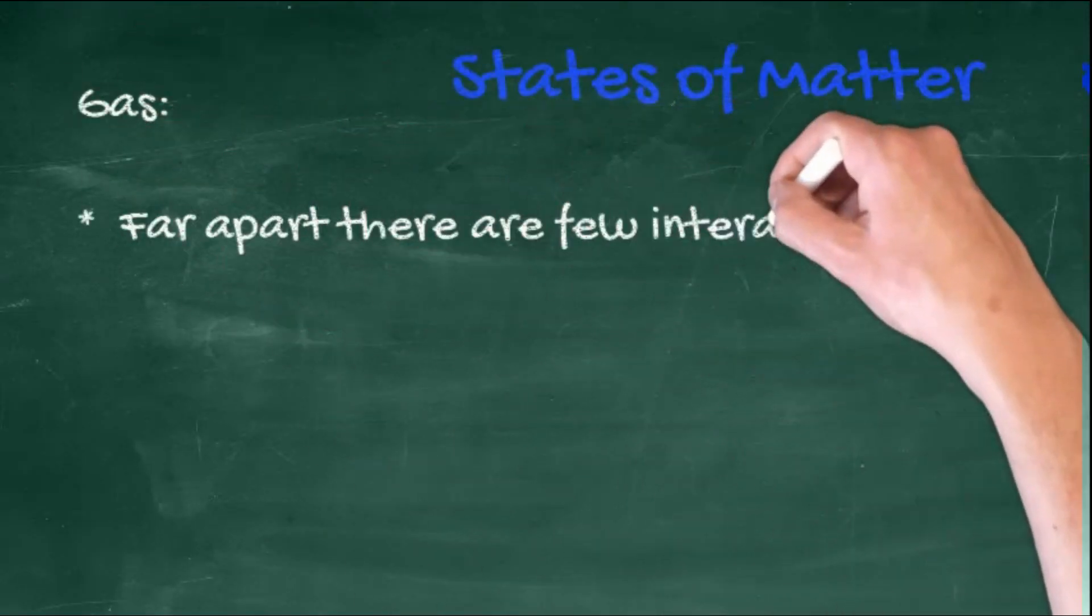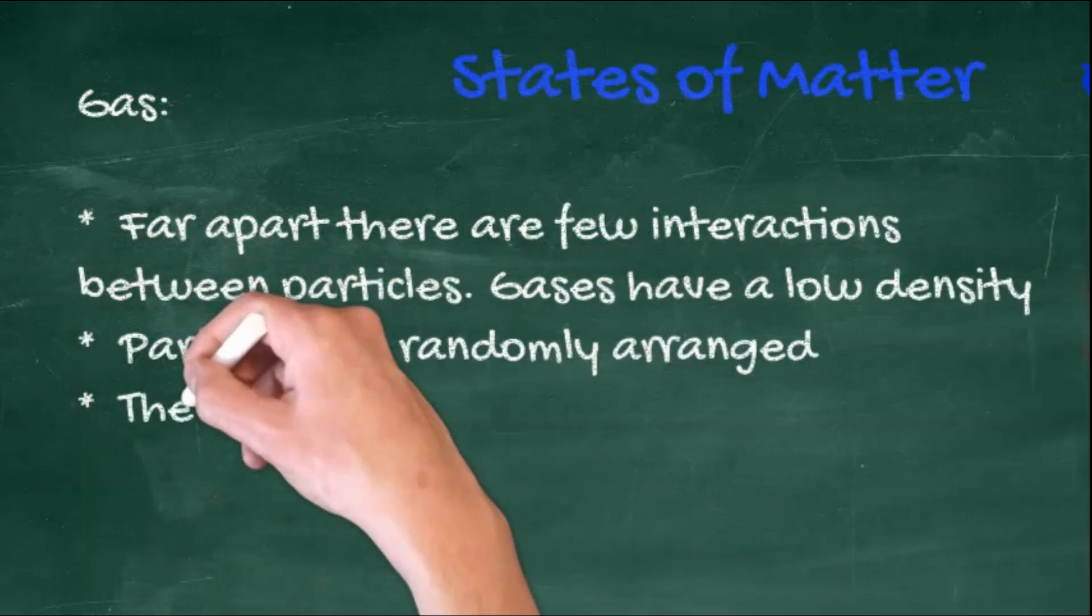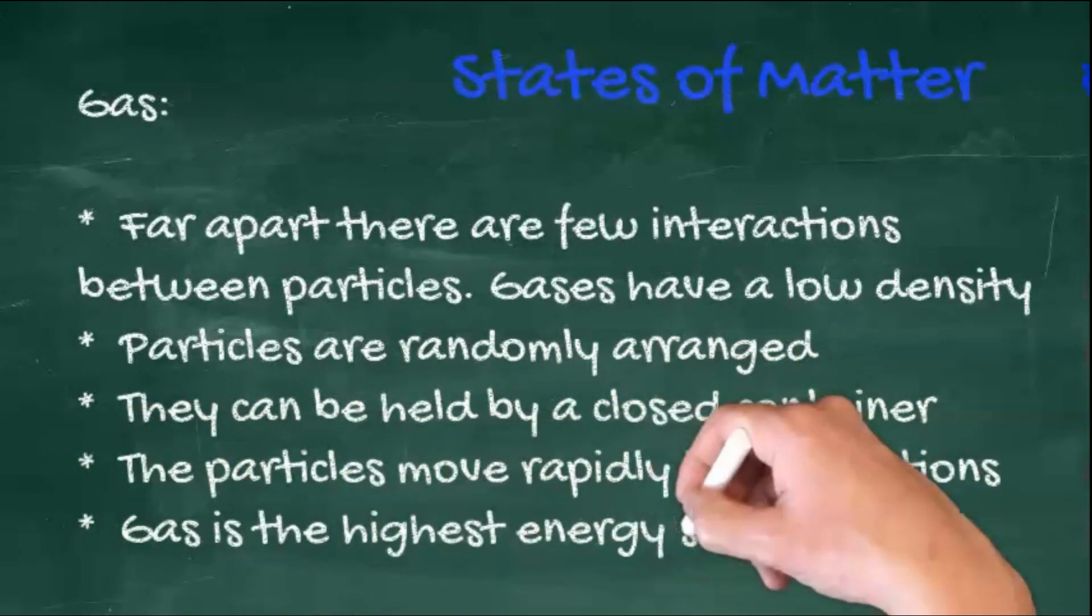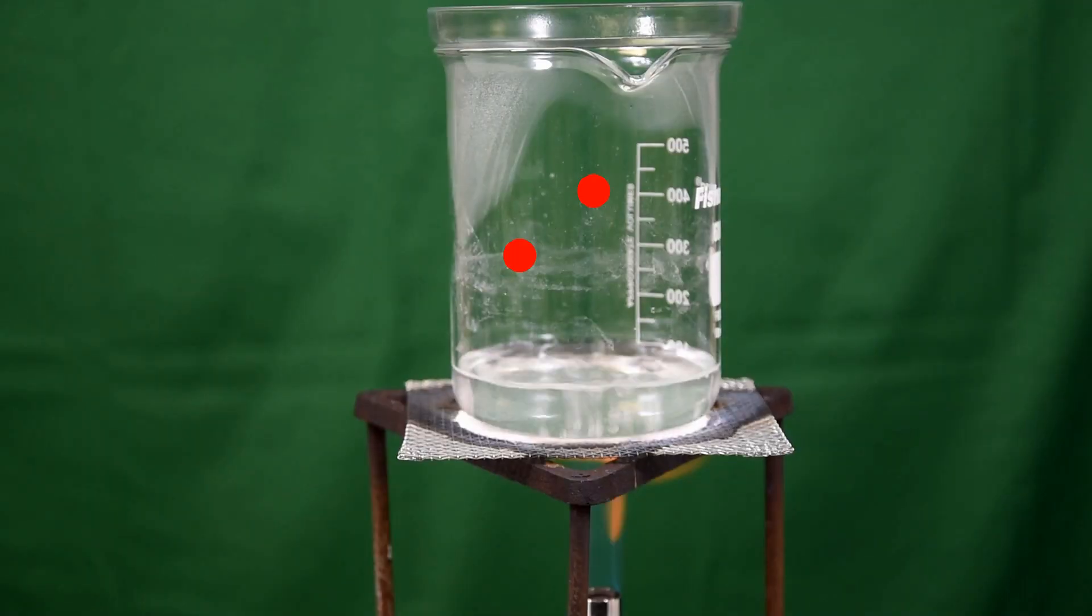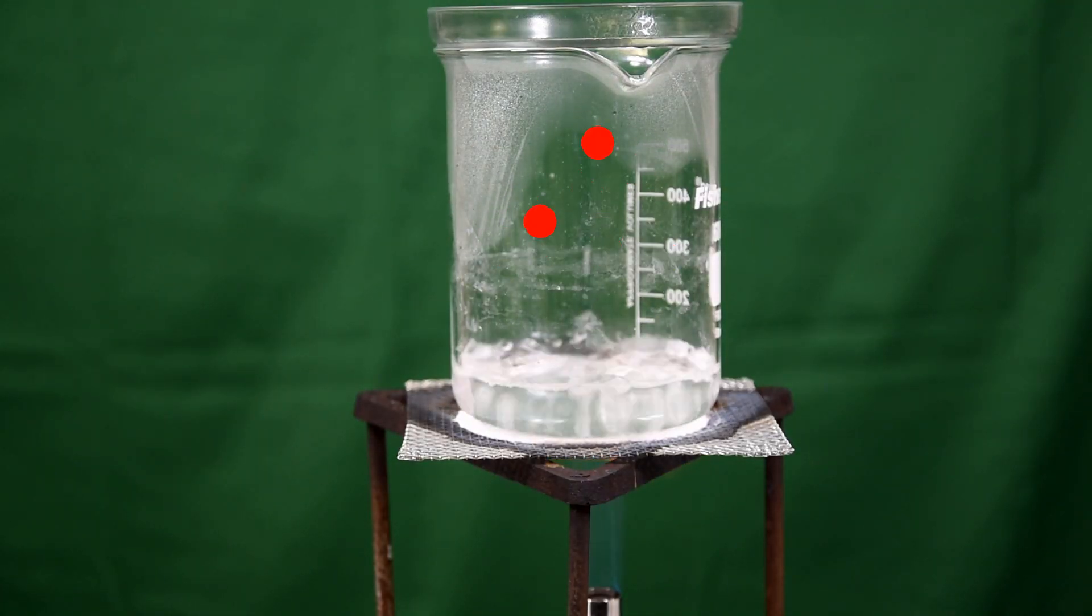In gases, the particles are far apart with very few interactions between them. They have a very low density and are randomly arranged. Gases can be held in a closed container, move rapidly in all directions, and have the highest energy state.